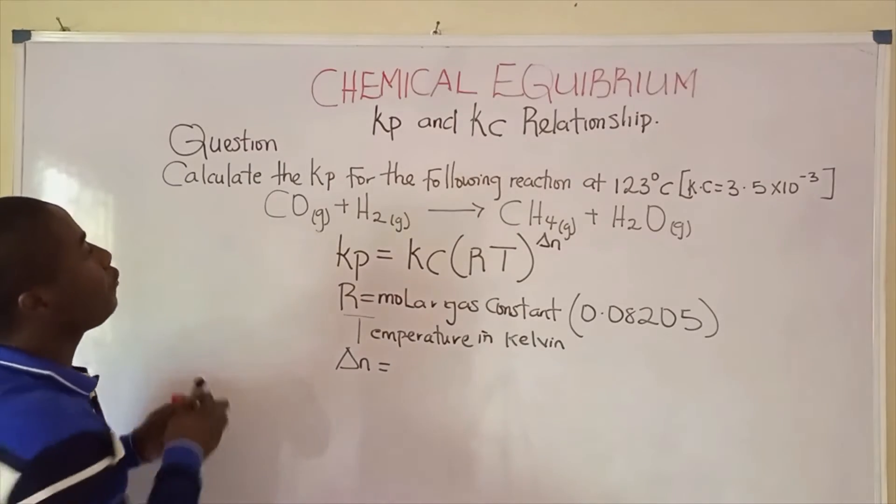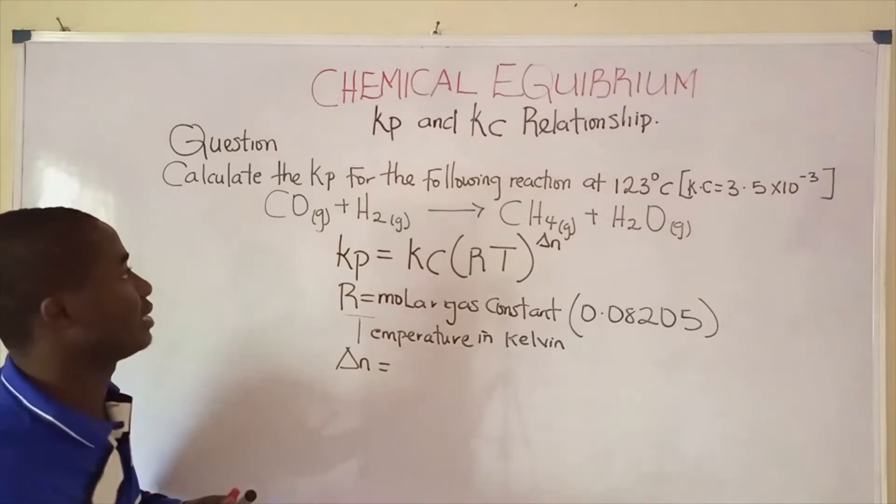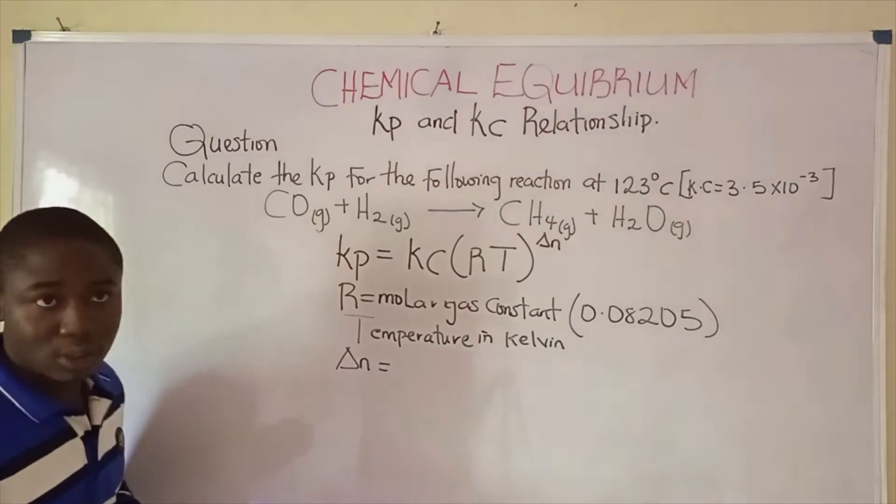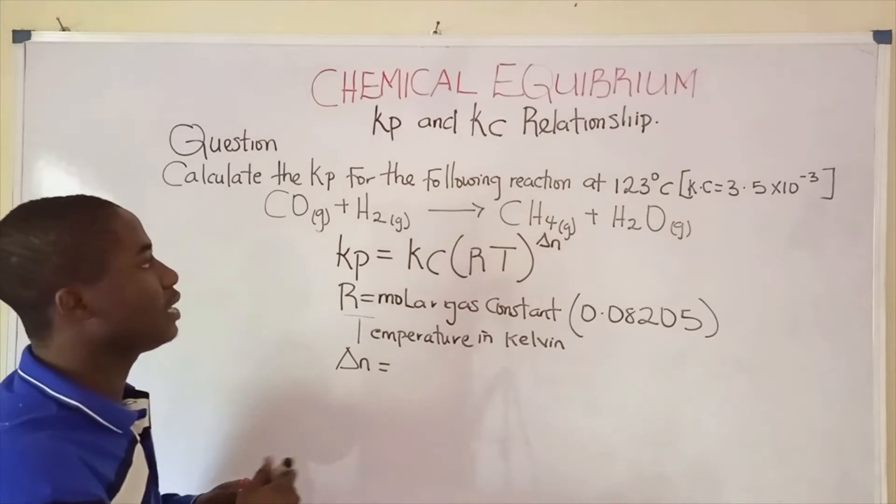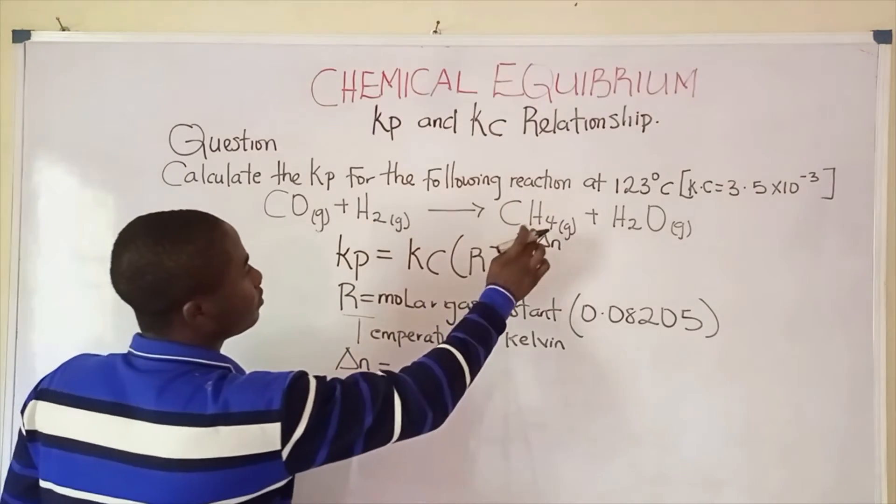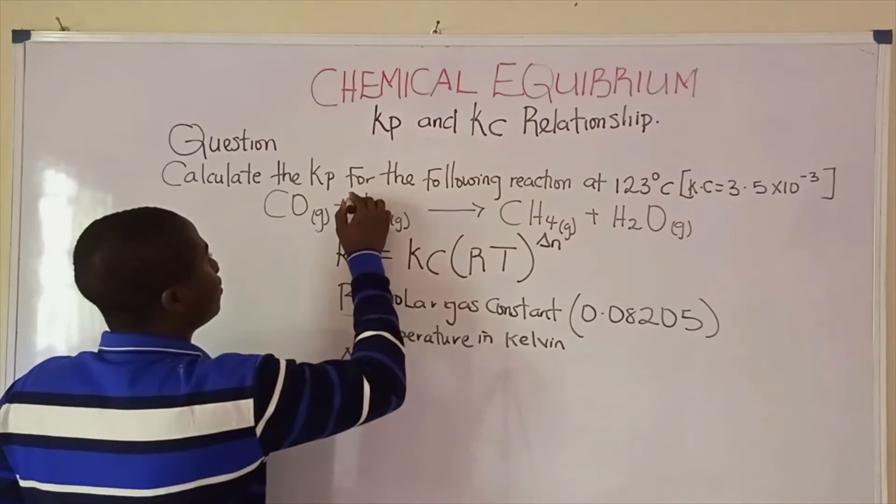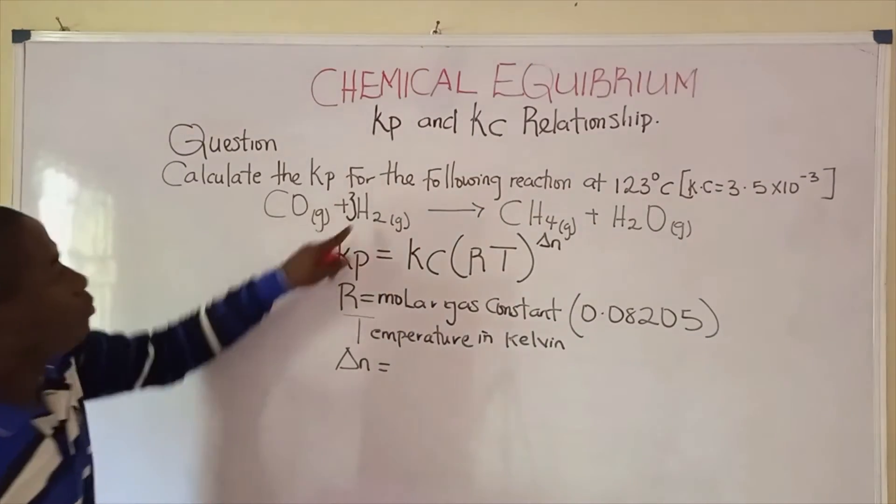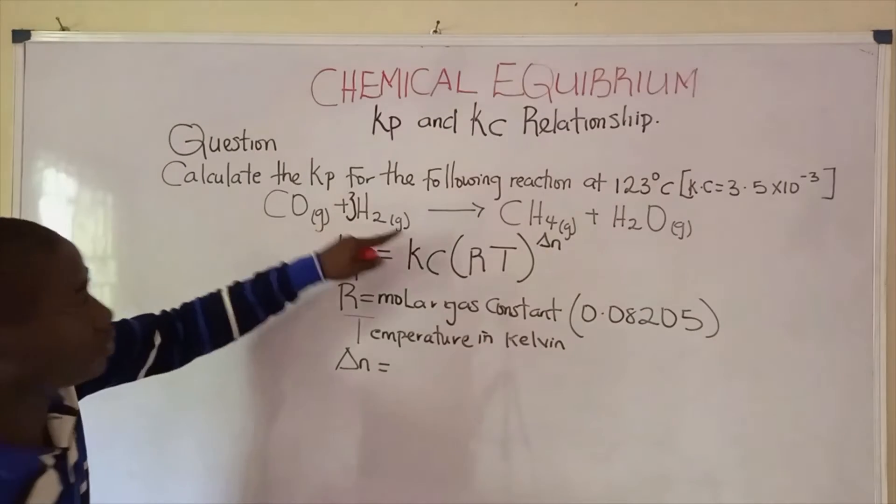First thing first, the reaction here must be balanced. If we want to balance this reaction, we simply put 3 moles of hydrogen here to make it 6 moles of hydrogen.